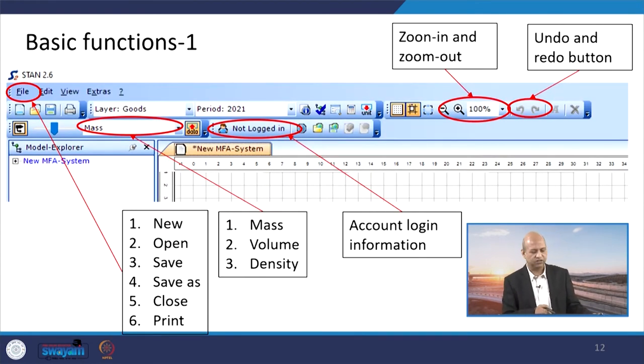This is the basic function you can see on the windows. It is simple as any other Windows tools you use whether Word or Excel. File is there, within file you can have new file or you can open or you can save, save as, close, those all those features are there. Similarly related, edit is there, view, extras. Then here you can see, you can choose whether mass, material flow mass can be there. If it is liquid then volume may be there, so mass, volume, or density you can choose from here. When you log in, your name will be there, user ID will be there. It is not logged in, so that is why it is shown like this.